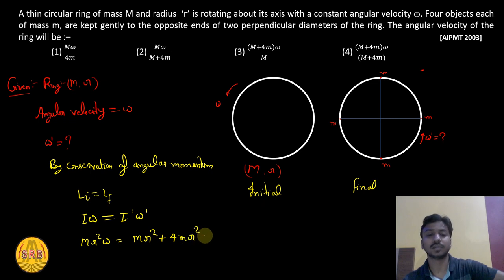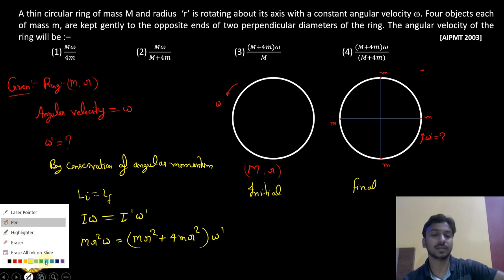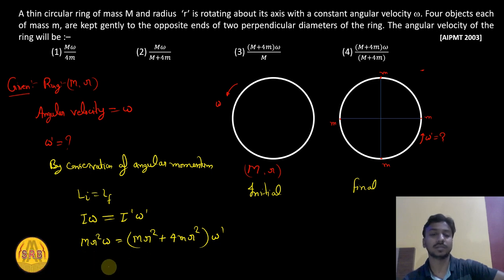So Mr²ω equals (Mr² + 4mr²)ω'. r² cancels out. Solving for ω': ω' equals Mω divided by (M + 4m). This is the final angular velocity of the whole system, which corresponds to the second option.